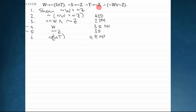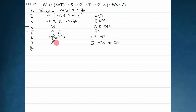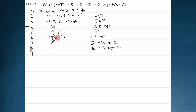I have w and not not z, so I'm just hunting for more automatic moves. I have w arrow not s and t; I have w, so I can get not s and t — that is premise one, modus ponens. I also have not not z, and I have two modus tollens available. That gives me s — premise two, modus tollens, double negate. And I can modus tollens again to get t — premise three, modus tollens, double negate.